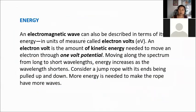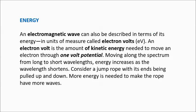An electromagnetic wave can also be described in terms of energy in units called electron volts. An electron volt is the amount of kinetic energy needed to move an electron through one volt of potential. Moving along the spectrum from long to short wavelengths, energy increases as wavelength shortens. Consider a jump rope: more energy is needed to make the rope have more waves — greater energy produces shorter wavelengths.